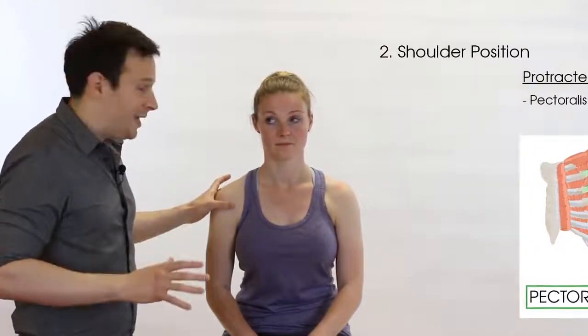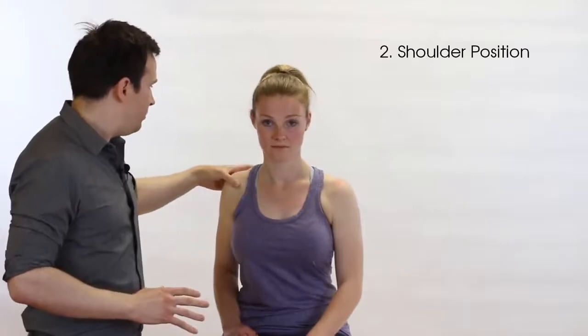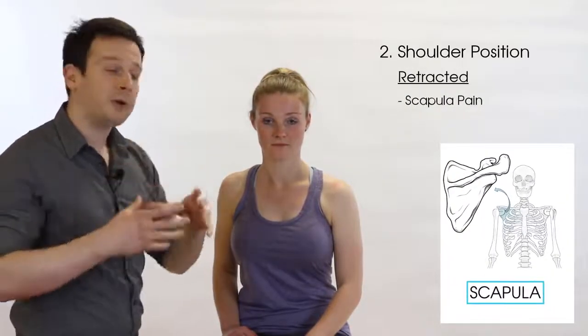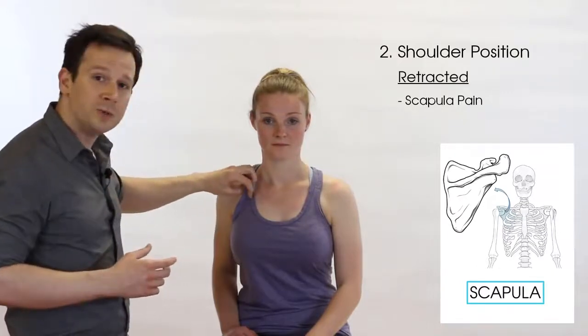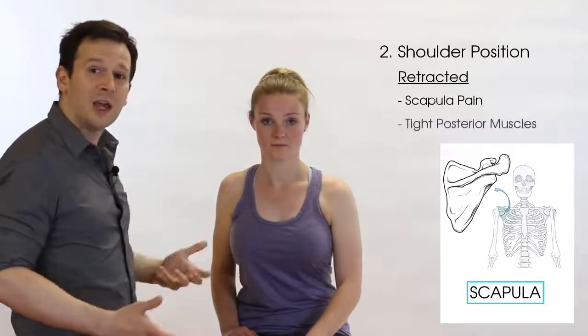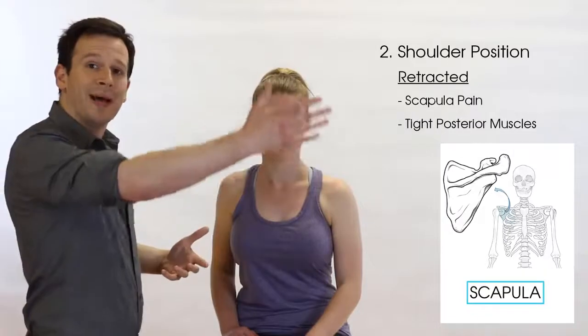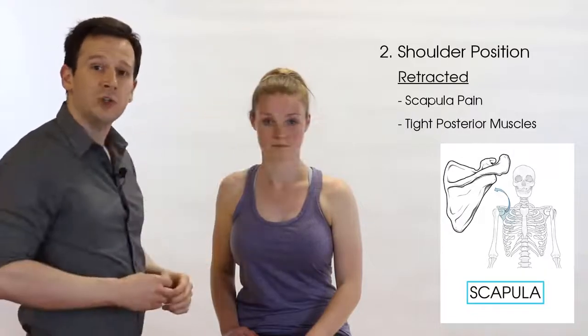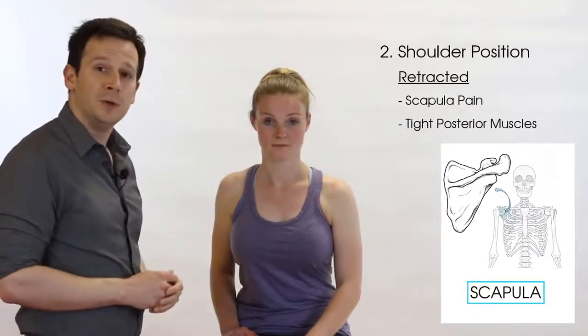More rarely, if someone is excessively retracted, that's more likely to be associated with pain in and around the scapula. Just as tightness at the front can cause problems, tightness at the back can also cause imbalance as you try and move your shoulder around — so that could be a clue too.